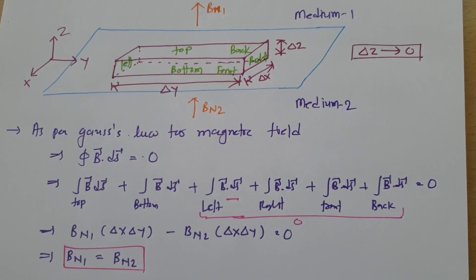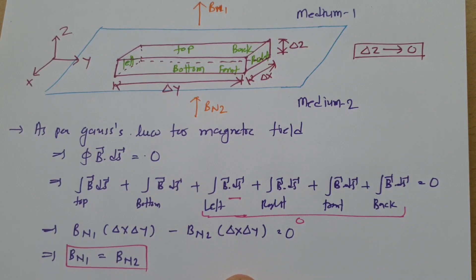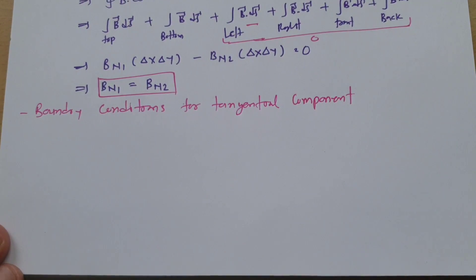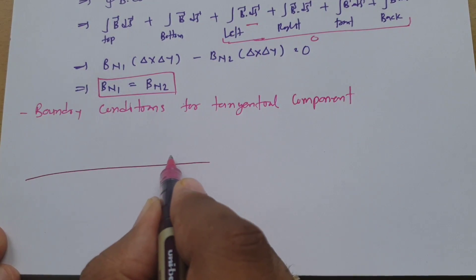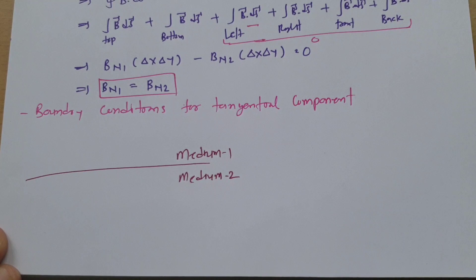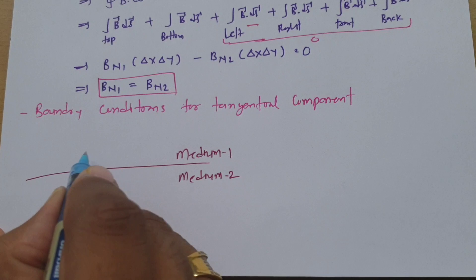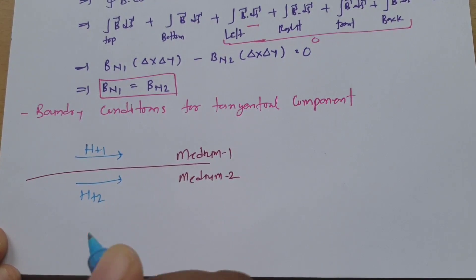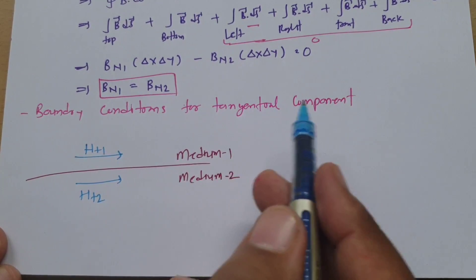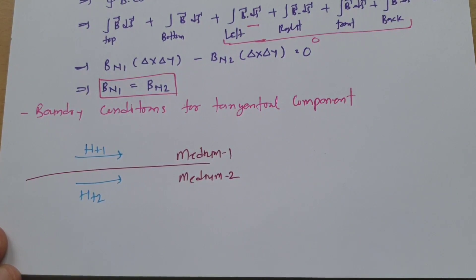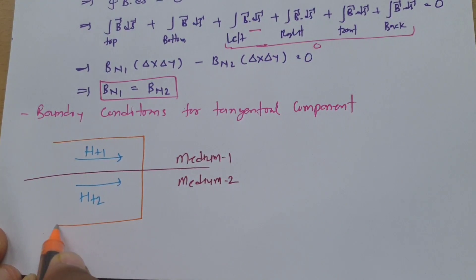Now let us derive the boundary condition for the tangential component. With medium one above and medium two below the separating surface, the tangential components of magnetic field intensity are HT1 and HT2 respectively.